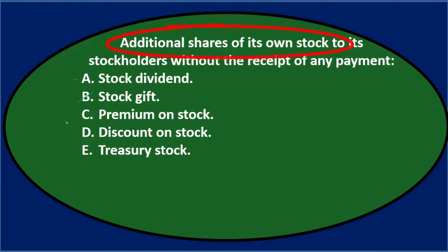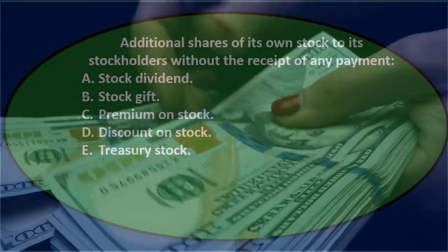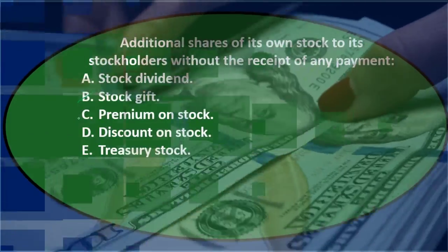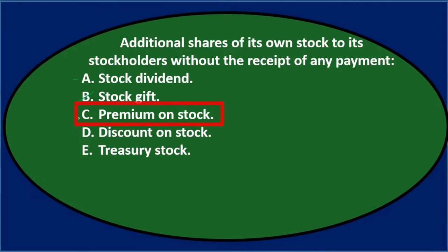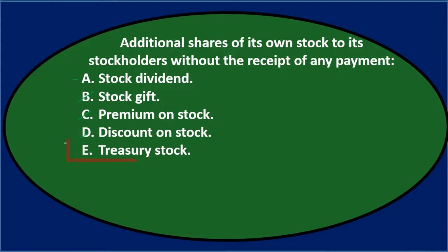Option C says premium on stock. Additional shares without payment — premium on stock would mean we issued it for more than it's worth, implying we got paid somehow. Premium and discount seem like terms used when we sell something, and we didn't sell it here. So C and D don't sound right. Option E says treasury stock — that's a familiar term, so I'll keep A and E as the remaining candidates.